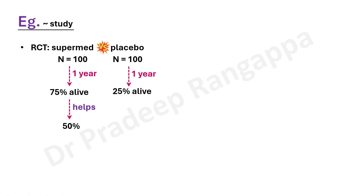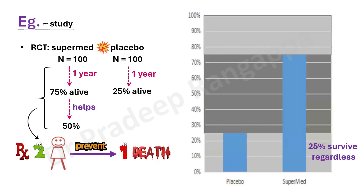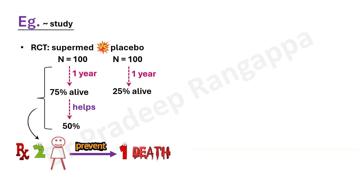Since the use of this medication helped an additional 50%, the NNT becomes two — you need to treat two patients to prevent one death. The difference of 75 minus 25 is the absolute risk reduction (ARR). NNT is calculated as 1 divided by the ARR, so 1 divided by 0.50 gives NNT of 2.